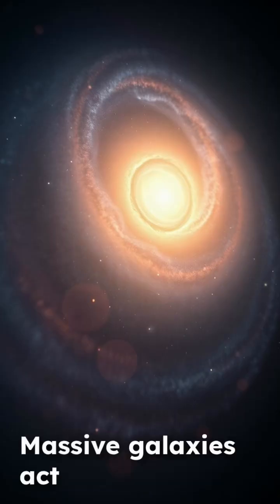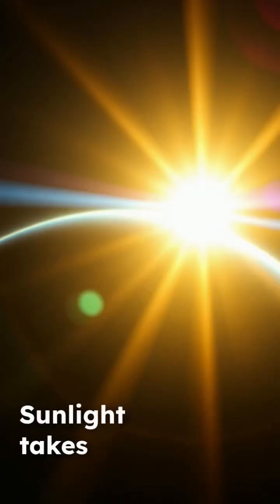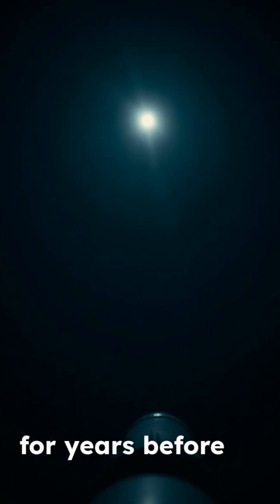Massive galaxies act like lenses, magnifying distant light. Sunlight takes about eight minutes to travel the 150 million kilometers to Earth. Starlight from faraway stars journeys for years before reaching us.